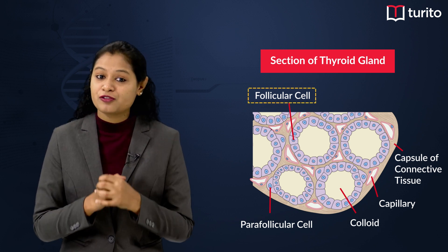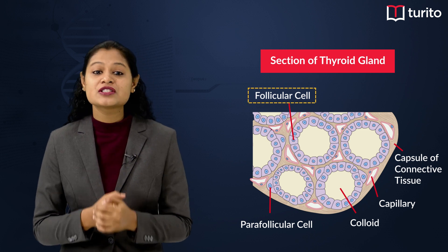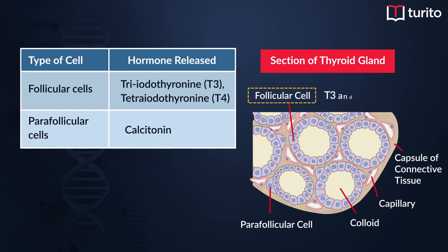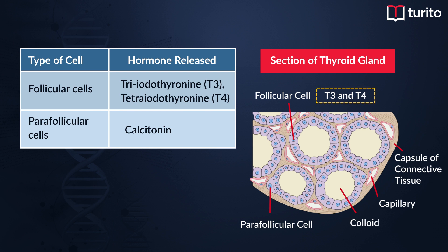Follicular cells are responsible for releasing the two major hormones of the thyroid gland: T3 and T4. T3 is triiodothyronine and T4 is tetraiodothyronine, also known as thyroxine. T3 is more active and potent but is released in lesser concentration compared to T4, so there is conversion of T4 into T3 near the active cells of the body.